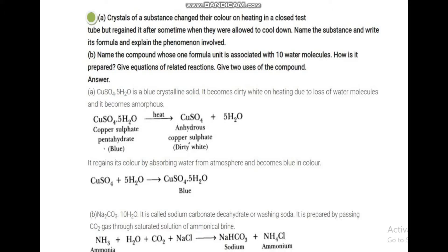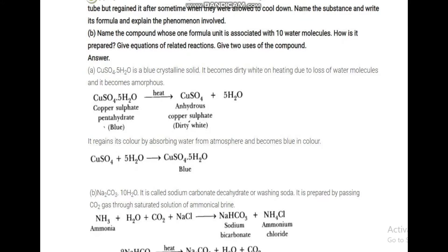The CuSO4·5H2O was hydrated because it had water of crystallization. When heated, the water of crystallization is lost, so it becomes anhydrous. CuSO4·5H2O, which is copper sulfate pentahydrate, is blue in color. On heating it gives CuSO4 plus 5H2O. The anhydrous copper sulfate is dirty white or white.